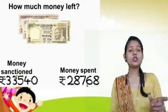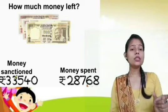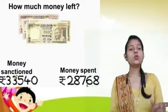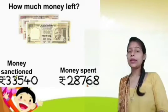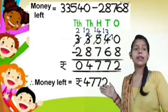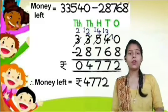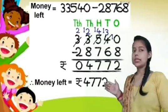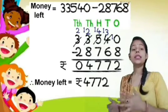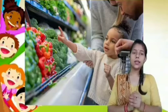To find the leftover amount, we see the keyword 'left' in this question, which tells us we are going to subtract. We subtract twenty-eight thousand seven hundred and sixty-eight from thirty-three thousand five hundred and forty-three. After subtracting, the answer is four thousand seven hundred and seventy-five — that is the amount left.